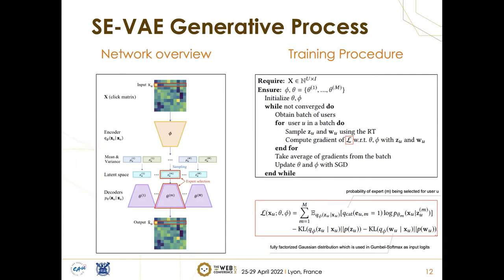We can summarize the overall network structure on the left-hand side, where the encoder maps the input into multiple experts — mean and variance in k-dimensional space. For each selected expert, we follow the same generative process from the conventional VAE. As shown in the figure, we have one encoder that distributes to each expert, and each expert has its own decoder. We found that this is indeed more effective than having a separate encoder for each.